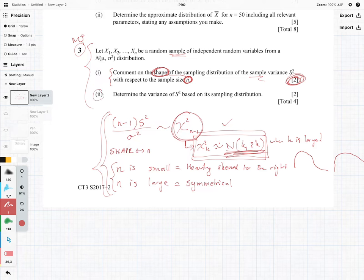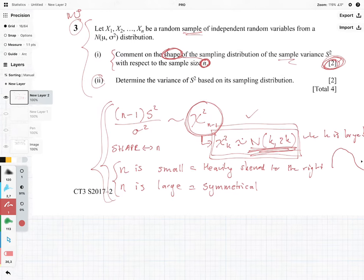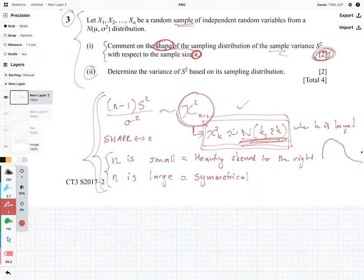If we look at part two now, which says determine the variance of s-squared based on its sampling distribution, well then what we're going to be doing is we are going to be looking at the variance of this thing here, n minus 1 s-squared divided by sigma-squared.